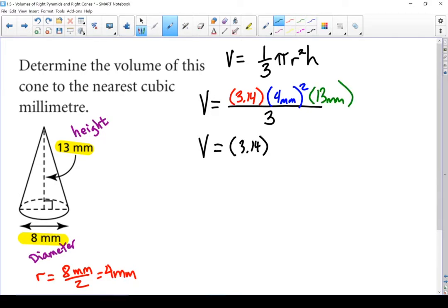Volume equals 3.14 times 4 squared, which is 16, times 13, divided by 3. Put all those top numbers together, I get 653.12.